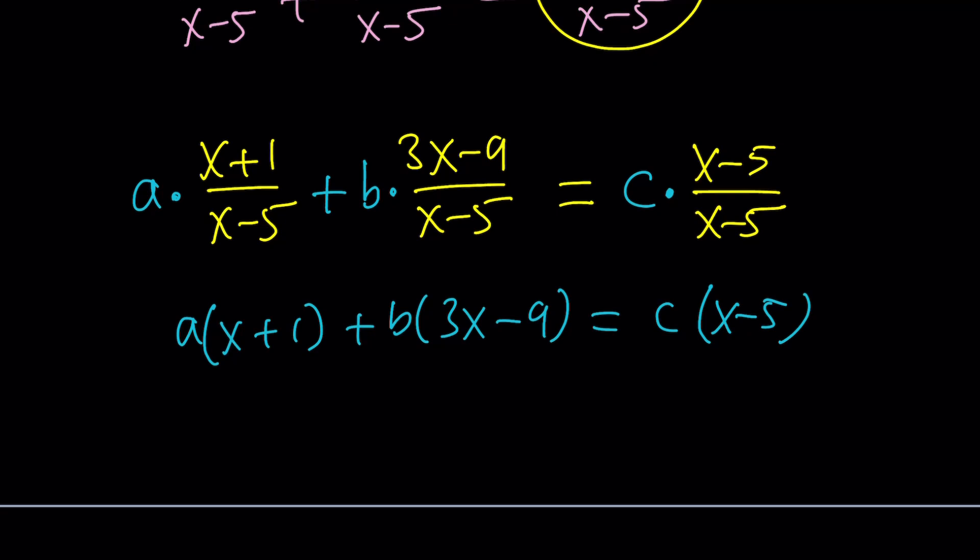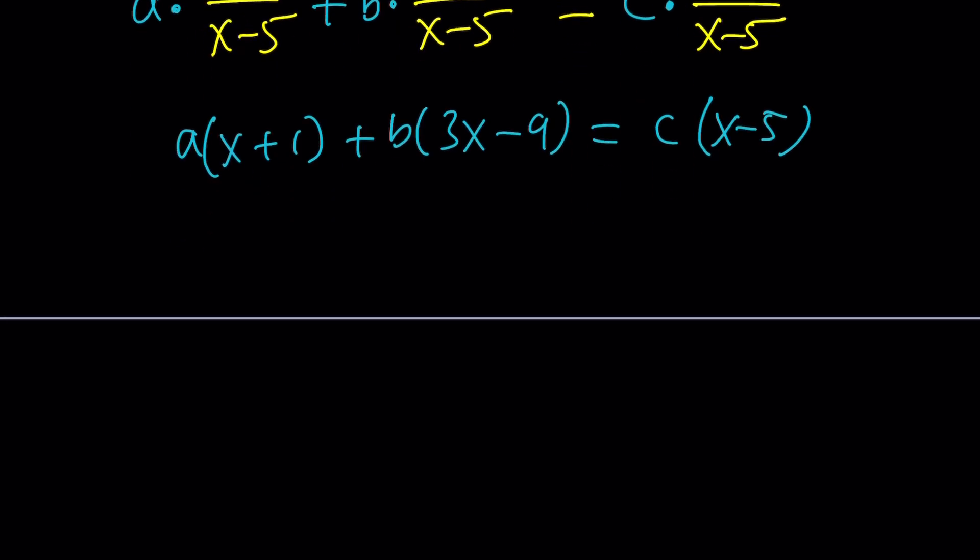Cool. And since x does not equal 5, we're allowed to multiply everything by x-5. So, let's go ahead and see what this entails. Distribute. You're going to get a system of equations from here, even though it looks like an individual equation. This is what is really powerful about polynomials. They have powers. So, ax + a + 3bx - 9b equals cx - 5c.